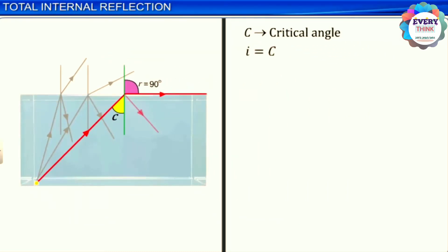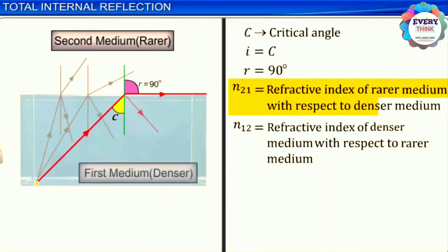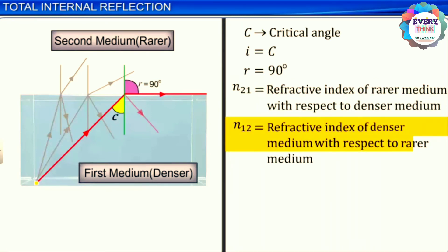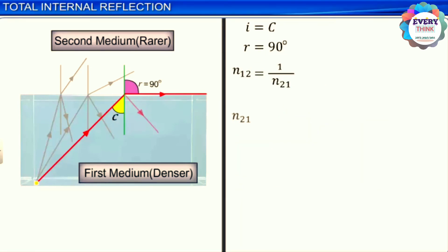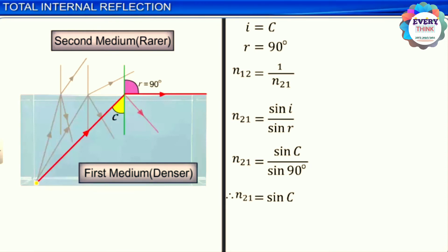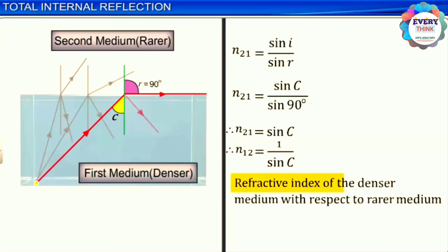That means, if i = C, then r = 90°. Let N21 be the refractive index of the rarer medium with respect to the denser medium. As per Snell's law, N21 = sin i / sin r = sin C / sin 90° = sin C. Therefore, N21 = sin C, and equivalently N12 = 1 / sin C. This means the refractive index of the denser medium with respect to the rarer medium, N12, is equal to 1 / sin C.